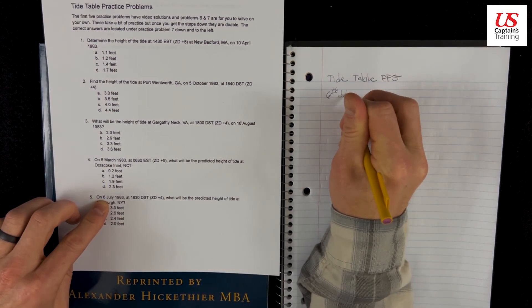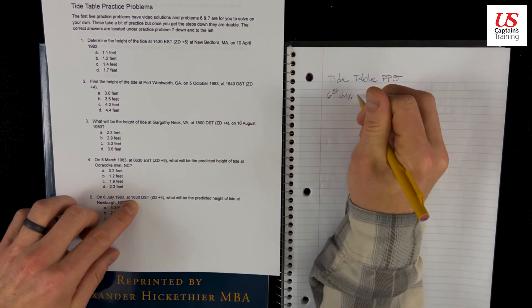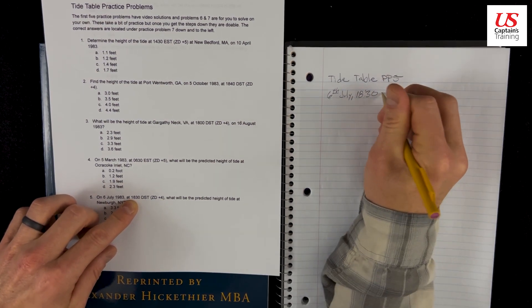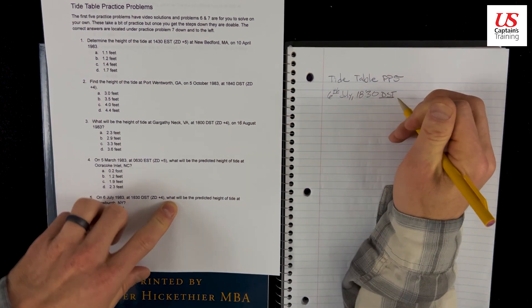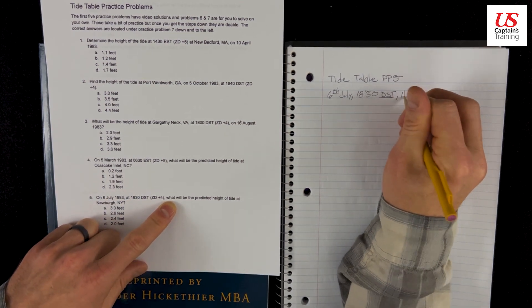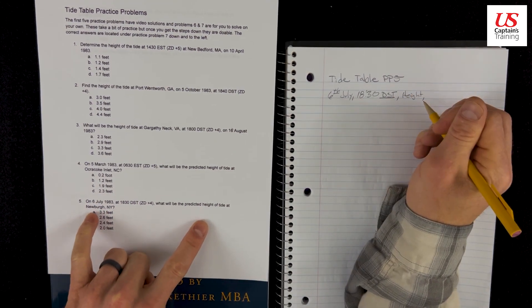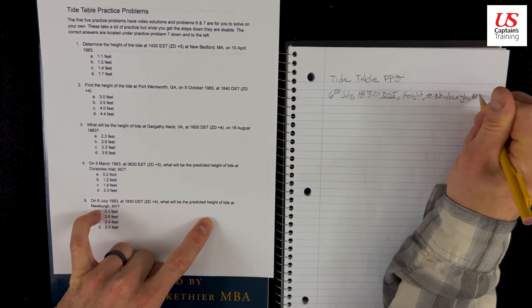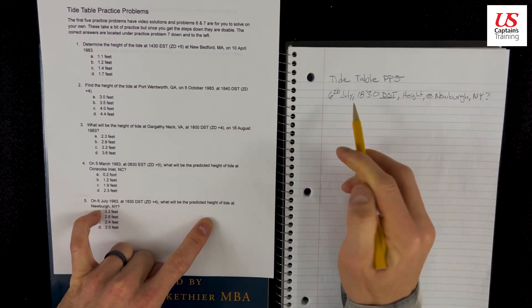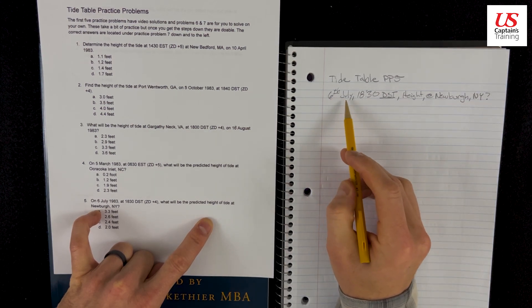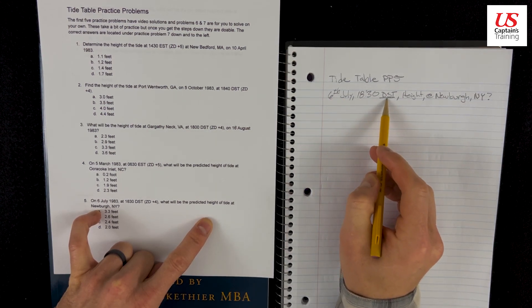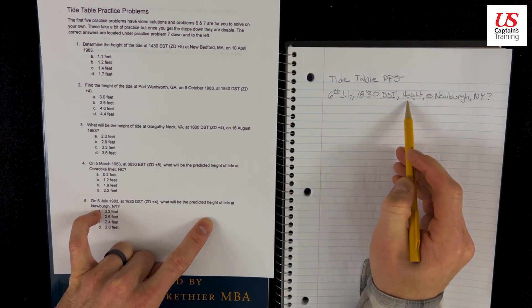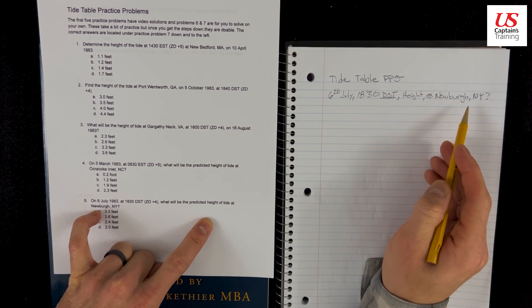6 July, 1830 DST, 1830 Daylight Savings Time. The height of tide at Newburgh, New York. Newburgh, one word. So on the 6th of July at 1830 Daylight Savings Time, what is the height of tide at Newburgh, New York?